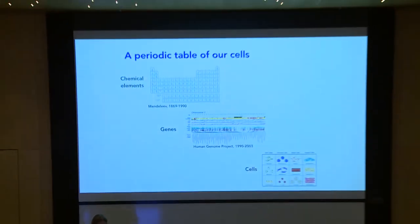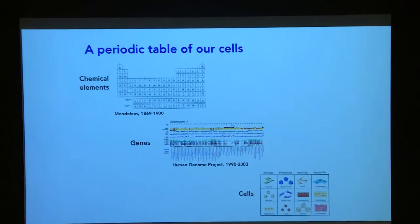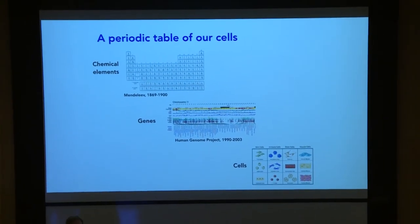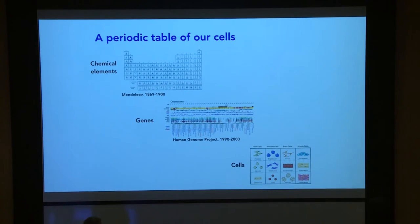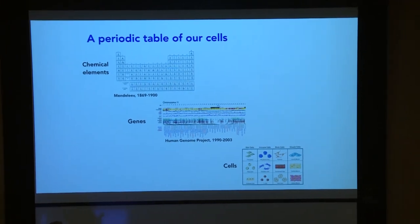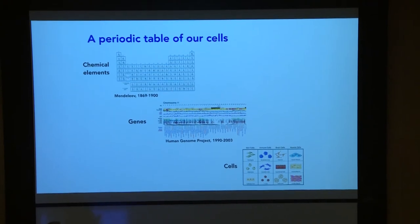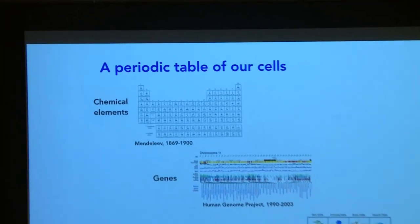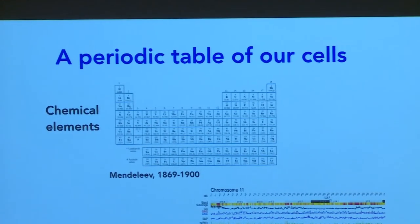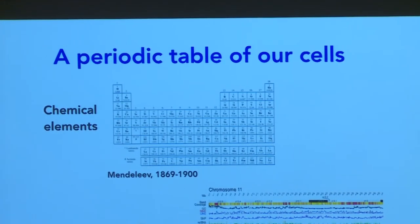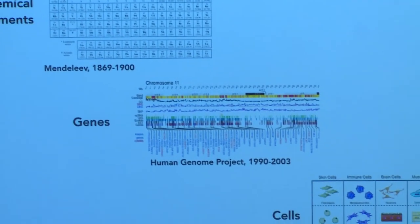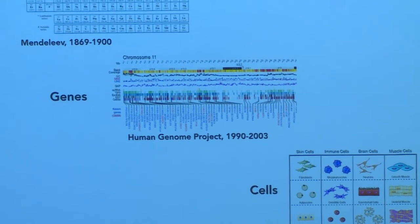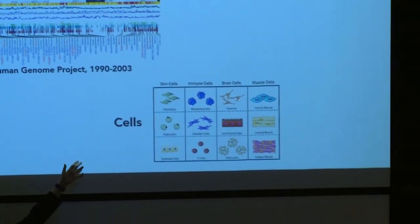The idea behind the Human Cell Atlas, which is driven through a combination of different communities including genomics and computational biology, is that we tackle the human body, human tissues and organs in a systematic way to build a periodic table of our cells. This is actually a really powerful analogy. I love periodic tables — I've built a periodic table of protein complexes. The periodic table is not just a classification system of cells and tissues and systems, as you can see here.